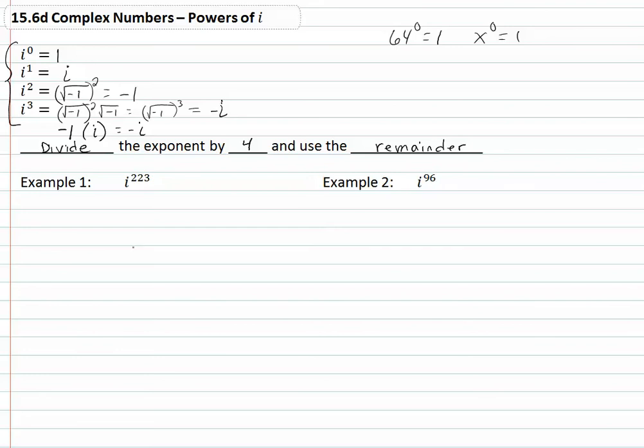I'm going to be using a calculator to show you how to do this. So we are going to look at the exponent, which is 223, we're going to take 223, and we're going to divide it by four, and we're going to get 55.75.